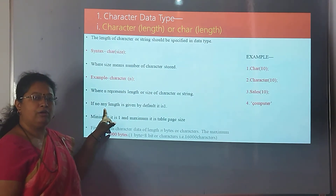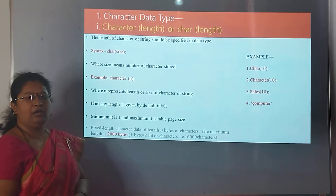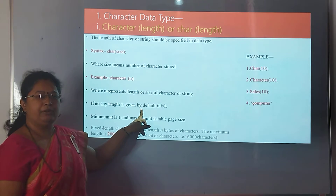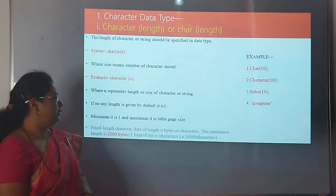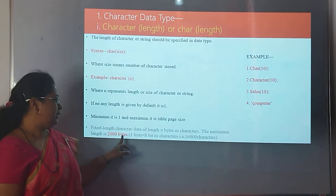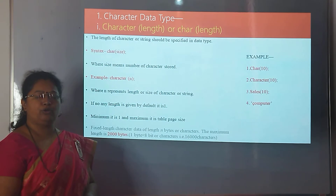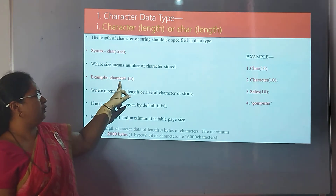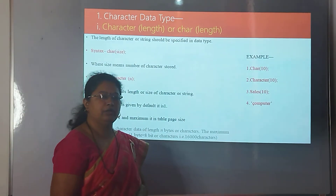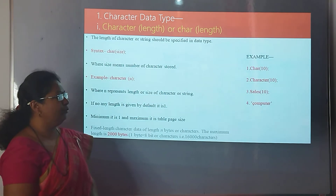If we do not give a particular size in the data type declaration, then the default value given by that data type is 1. The maximum data which can be stored in the CHAR data type is 2,000 bytes, meaning a maximum of 16,000 characters can be stored. Here is an example of the CHAR data type showing how we store character data into the database.